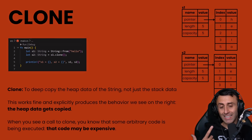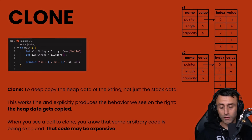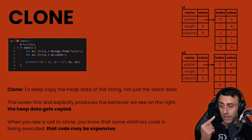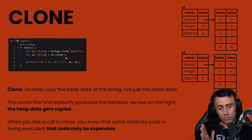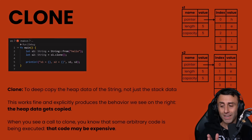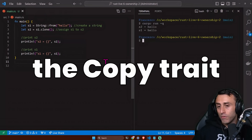Why do we have to use .clone() instead of just the equal sign? Because Rust by default doesn't want us to do hard copies on everything on the heap, since this is expensive in terms of resources. If we just use equal, it creates a shallow copy — a move. From a readability perspective, when you see s2 = s1.clone() you know something significant is happening, so we should be very intentional when doing a hard copy of a variable stored on the heap.